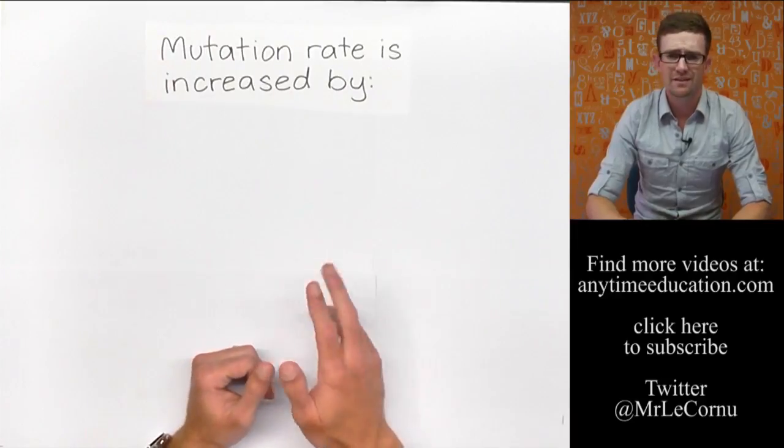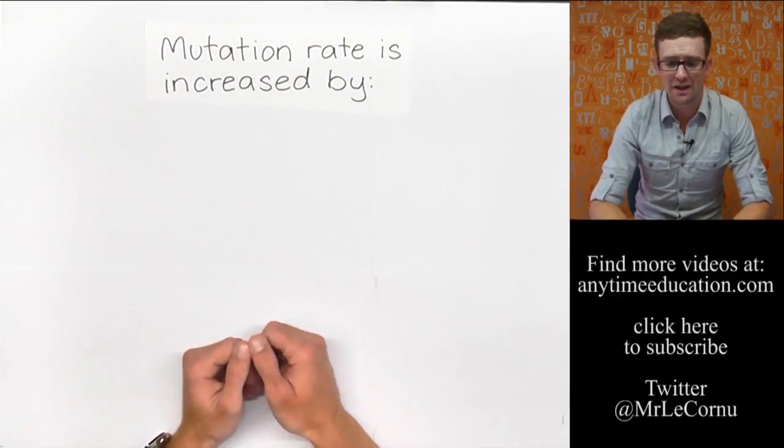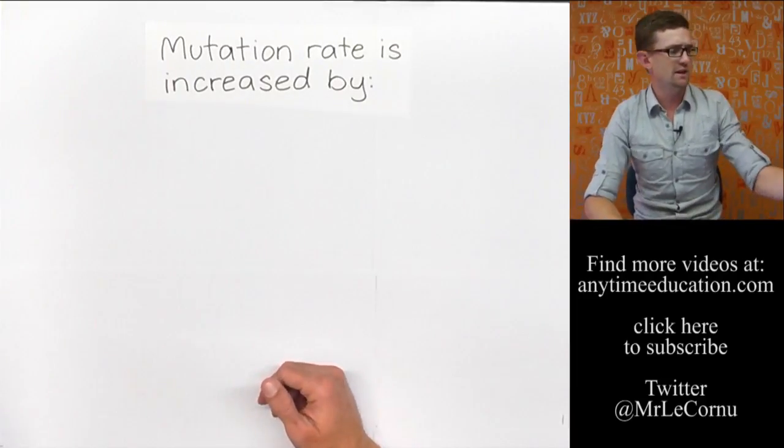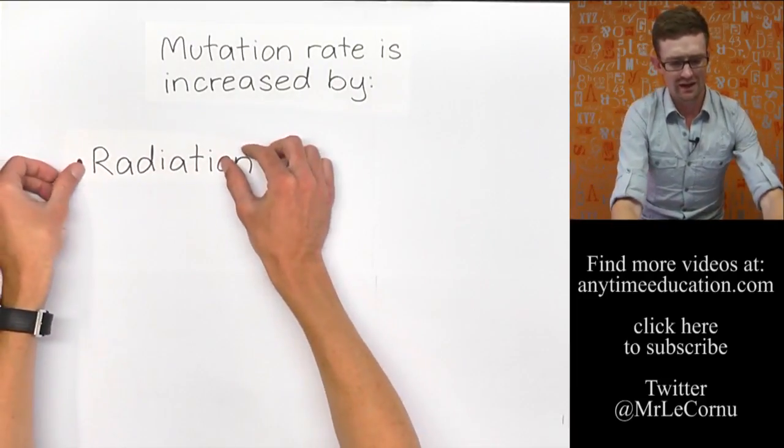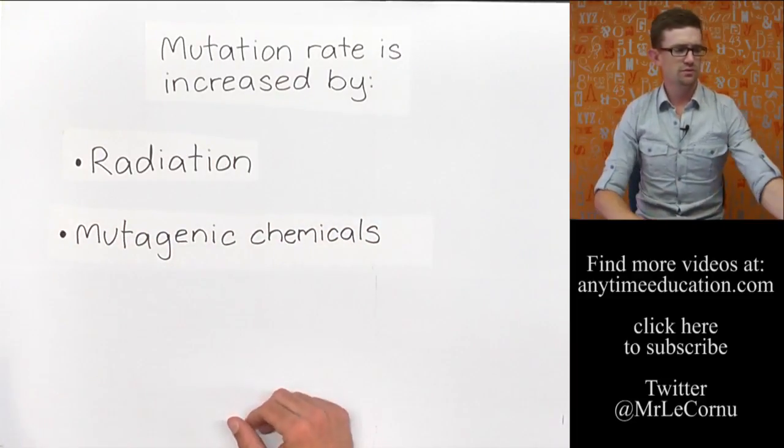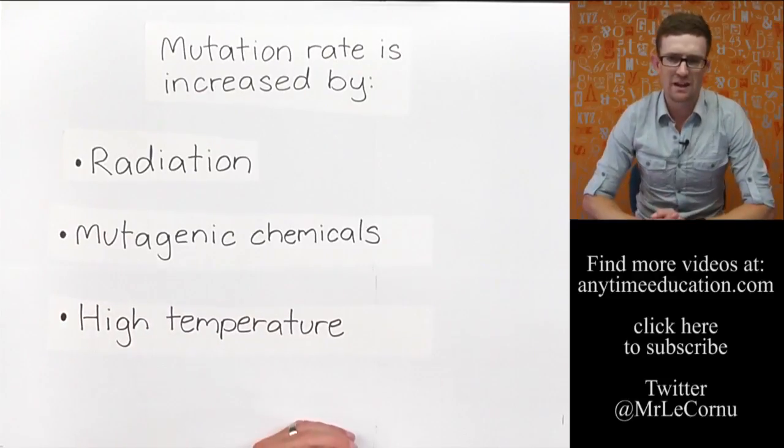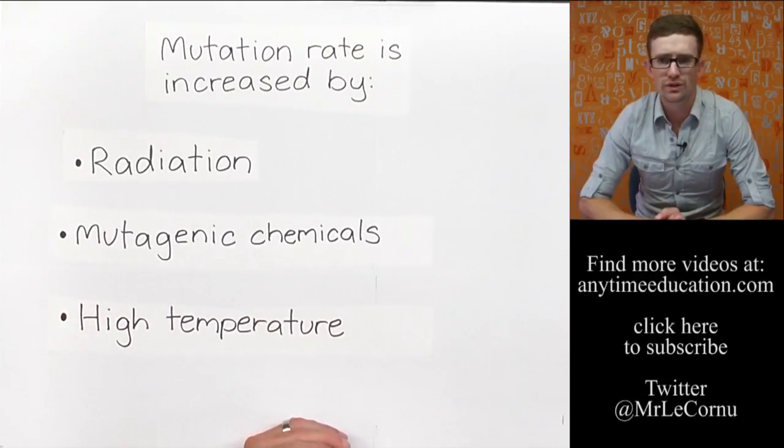So to summarize again, the three factors that can induce mutations or increase the mutation rate are radiation, high-energy radiation, mutagenic chemicals, and high temperature. So there you have it. They are what cause mutations.